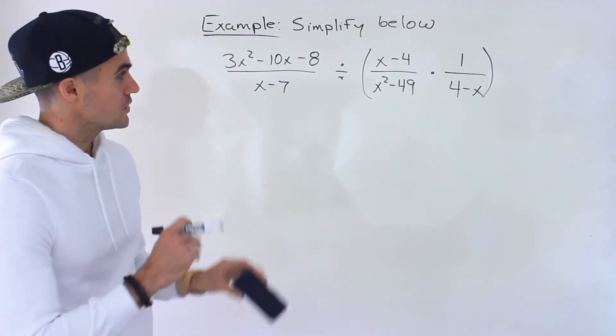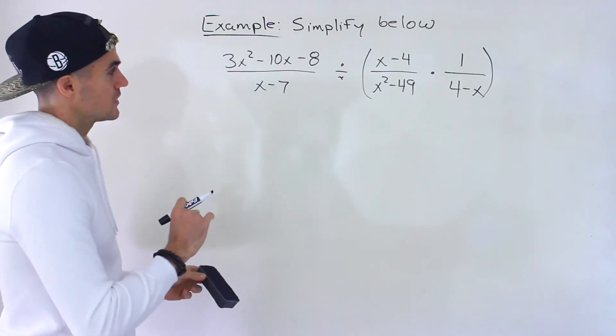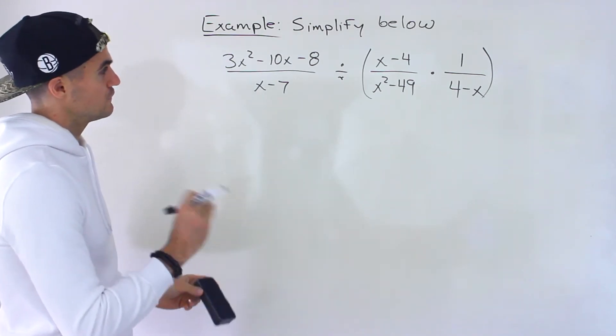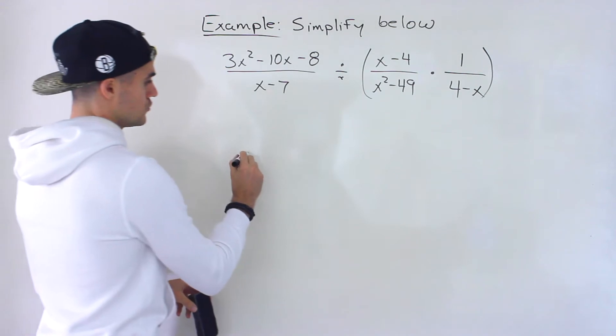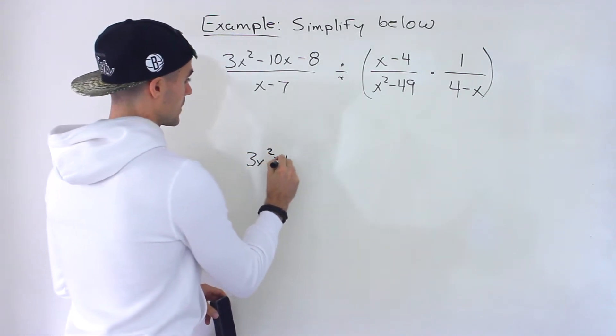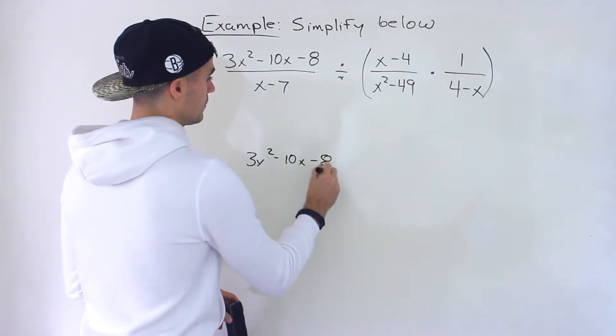So first thing you want to do with something like this as we've done in previous videos is you want to factor everything. So starting with the numerator 3x squared minus 10x minus 8 how can we factor that?